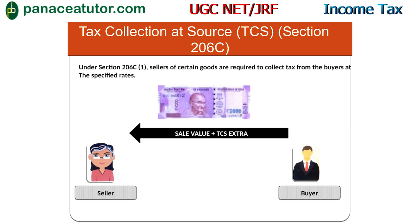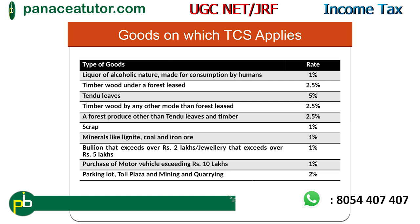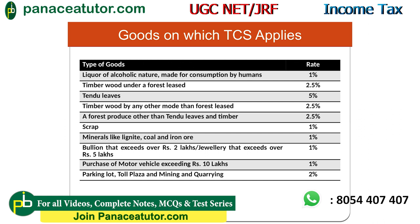TCS applies only in specific cases. The specified goods and rates are: liquor of alcoholic nature for human consumption 1%; timber wood under a forest lease 2.5%; Tendu leaves 5%; timber wood by any other mode than forest lease 2.5%; forest produce other than Tendu leaves and timber 2.5%; scrap 1%; minerals like lignite, coal and iron ore 1%; bullion exceeding Rs. 2 lakh and jewelry exceeding Rs. 5 lakh 1%; purchase of motor vehicle exceeding Rs. 10 lakh 1%; parking lot, toll plaza and mining quarrying 2%.